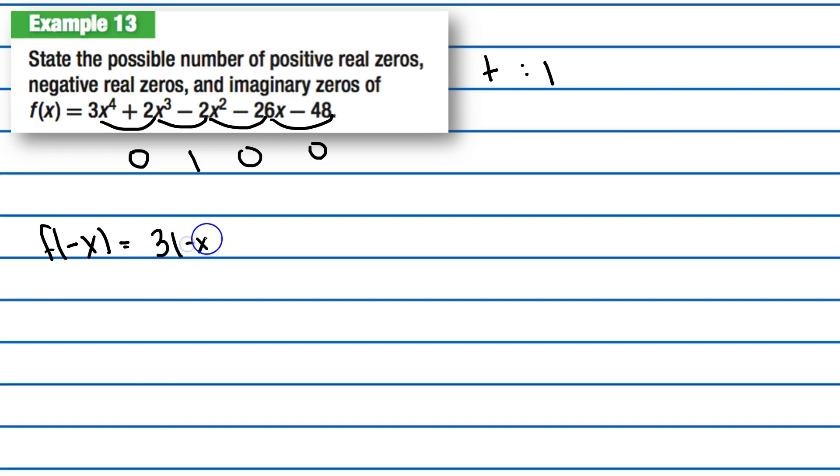So, 3 times negative x to the 4th power, plus 2 times negative x to the 3rd power, minus 2 times negative x squared, minus 26 times negative x, minus 48.